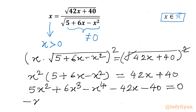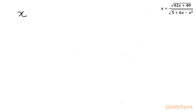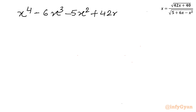Now let us write in appropriate order: -x⁴ + 6x³ + 5x² - 42x - 40 = 0. I will multiply this equation by -1, so the equation becomes x⁴ - 6x³ - 5x² + 42x + 40 = 0.